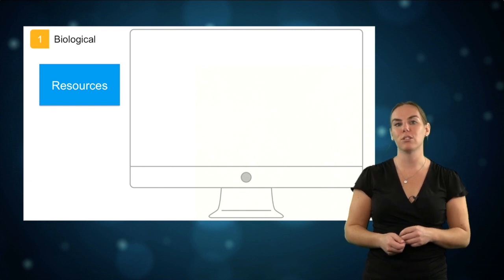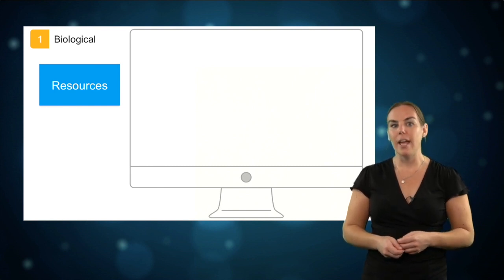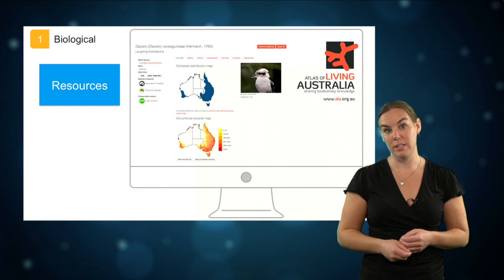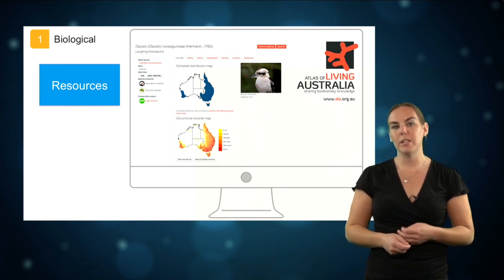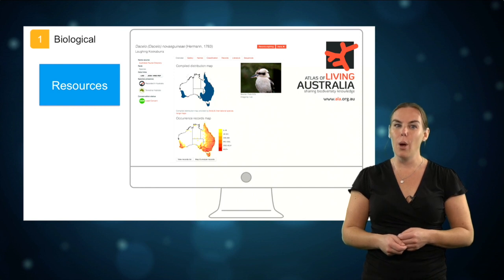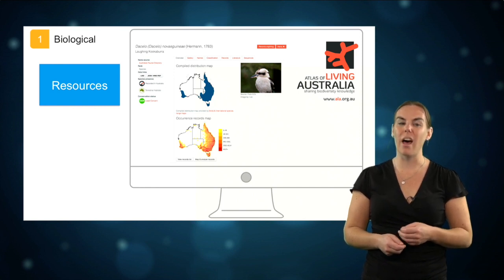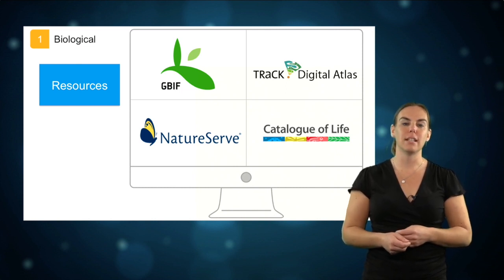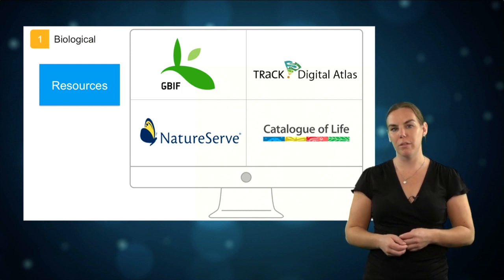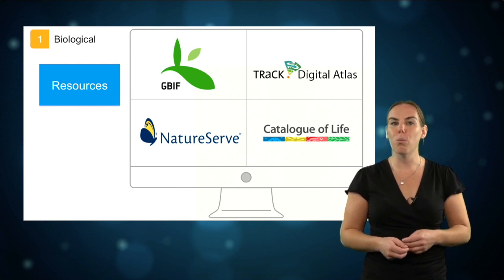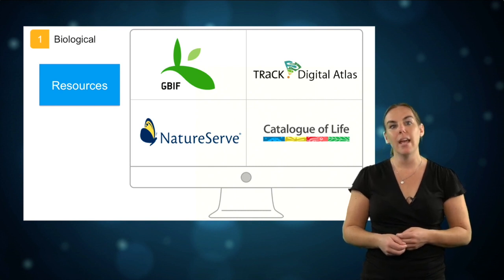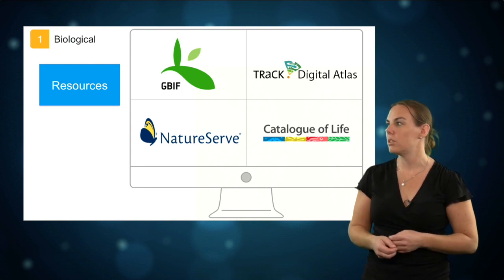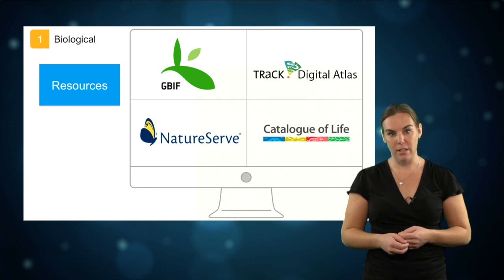There are an increasing number of resources online where such data is collated and you can visualize or download occurrence data sets of your species. In Australia, for example, there is the Atlas of Living Australia, which has 194 data set collections with occurrence records for more than 100,000 species. At a global level, the Global Biodiversity Information Facility is a valuable resource with free and open access to occurrence records of more than 1.5 million species. If you are more interested in a particular taxa or group of species, there is a variety of resources such as TRAC, which has data about Australian fish distribution.